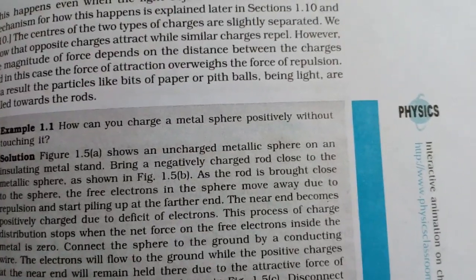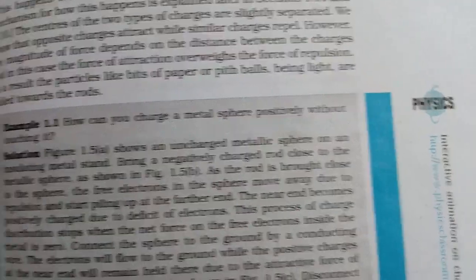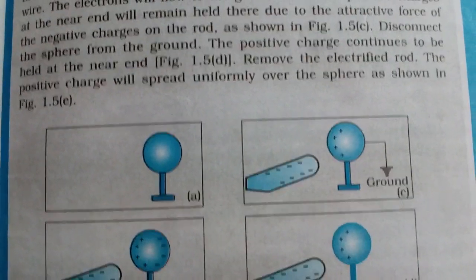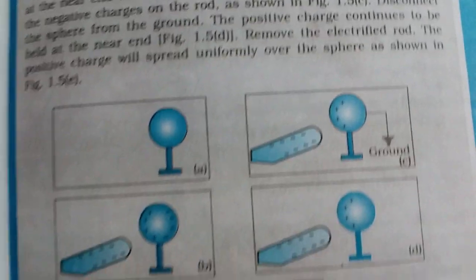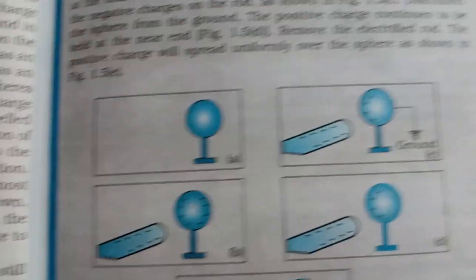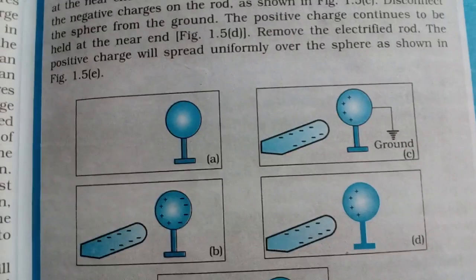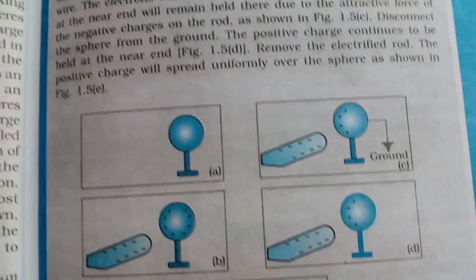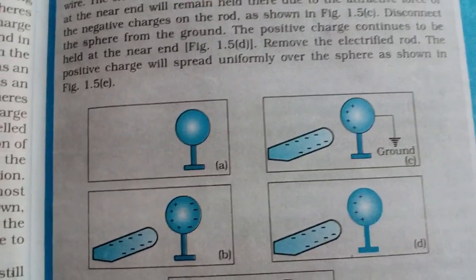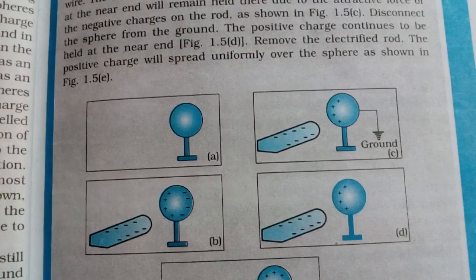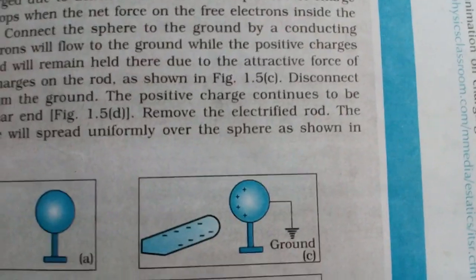The NCERT example 1.1 asks: how can you charge a metal sphere positively without touching it? Look at the diagram. A metallic sphere is mounted on an insulating stand. Then a negatively charged body — such as a plastic rod rubbed with wool — is brought near. The left-hand side of the sphere gets a positive charge because free electrons move to the right-hand side. So the left-hand side becomes positive and the right-hand side becomes negative.